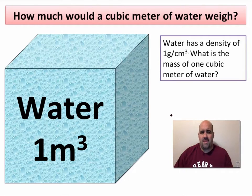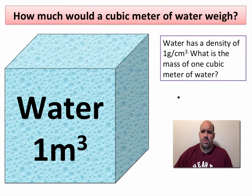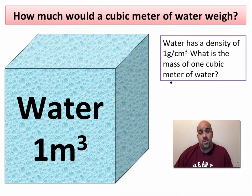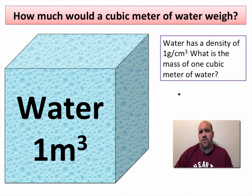Hi, Mrs. Zappone here, and today we're going to ask: how much would a cubic meter of water weigh? Assuming that water has a density of one gram per centimeter cubed, what would the mass of one cubic meter of water be? How much would that be in pounds? Could you lift it? We're also going to look at the question of how many cubic centimeters are there in a cubic meter.